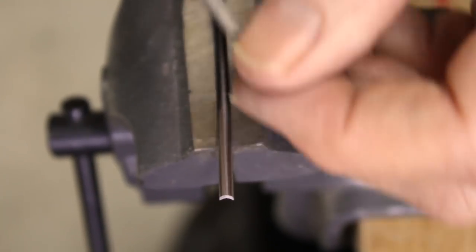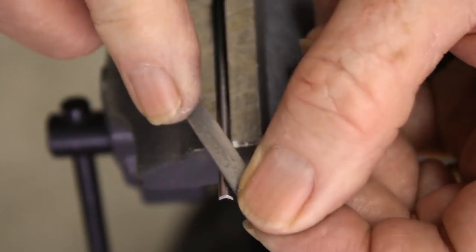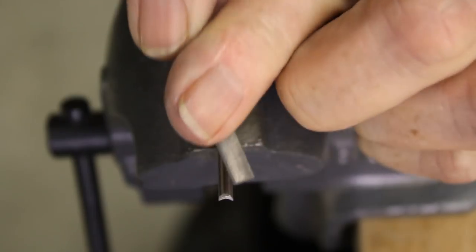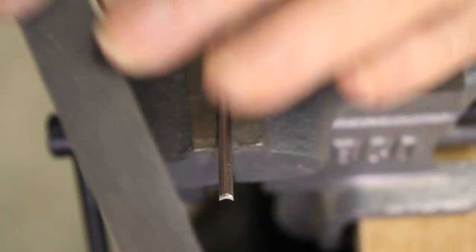Finally, turn the blank over and file the curved bevel, bringing it up to very near the bottom of the groove. The exact shape of this bevel is not critical, and it can be adjusted later.